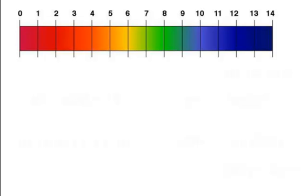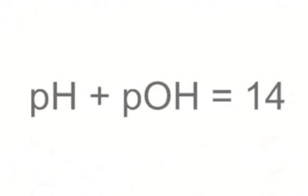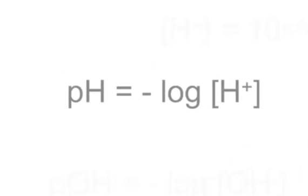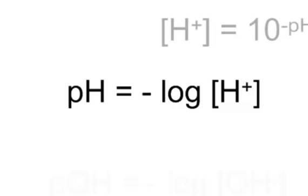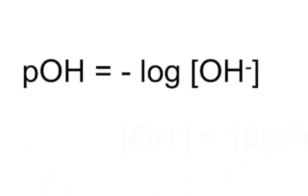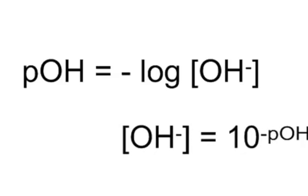Let's go to our pH calculations. Remember, if you have a strong acid or strong base, use your equations immediately. pH plus pOH equals 14 — they have to add up to 14. We know [H+] times [OH-] always equals 1×10⁻¹⁴. The equation to find pH is: pH = -log[H+]. If you've been given the pH, then [H+] = 10^(-pH). Similarly, pOH = -log[OH-], and [OH-] = 10^(-pOH).